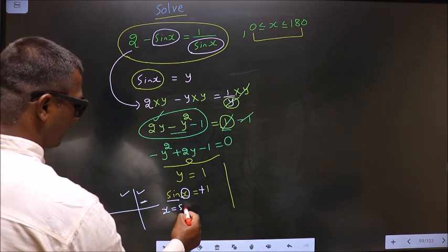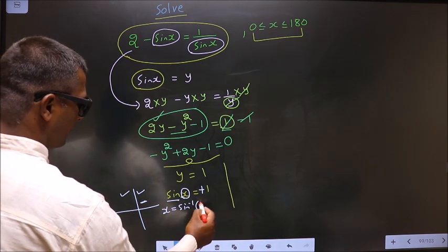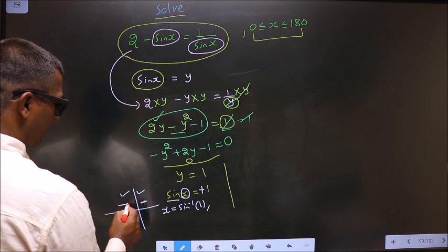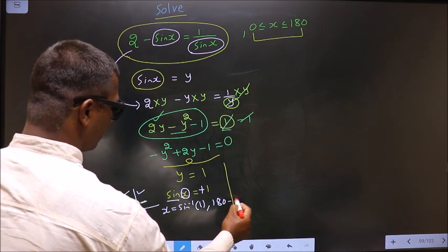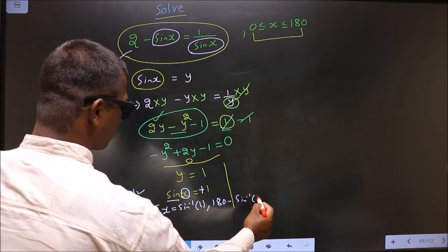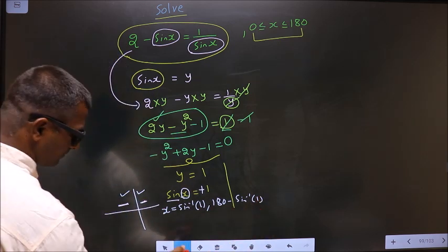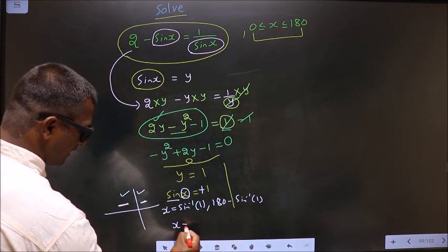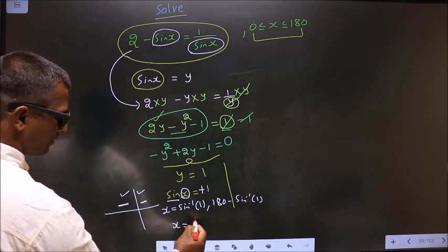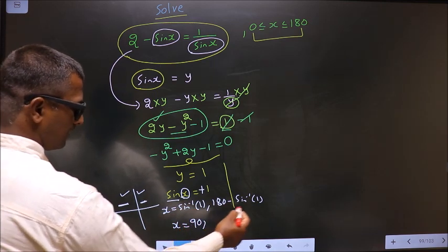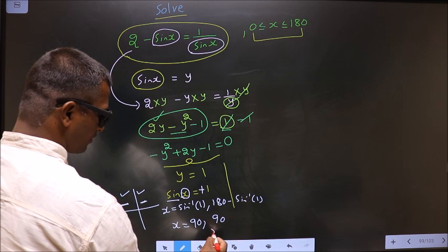To get an angle in the first quadrant, we do directly sine inverse 1. To get an angle in the second quadrant, we should do 180 minus sine inverse 1. Now x equals, put this in the calculator, you get 90. Calculate this, you get 90.